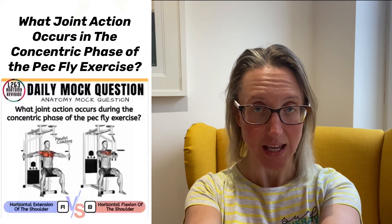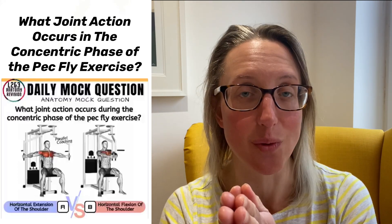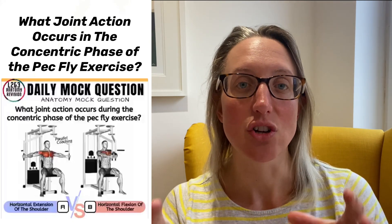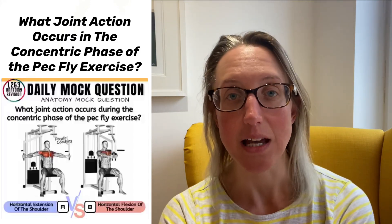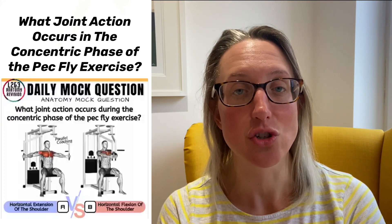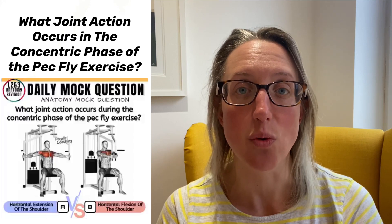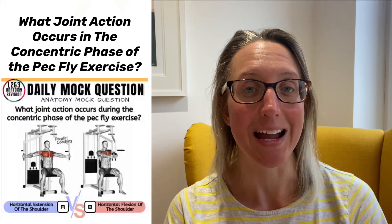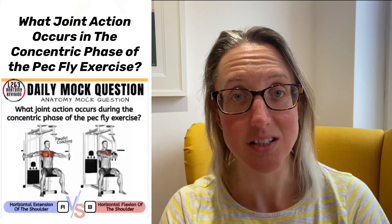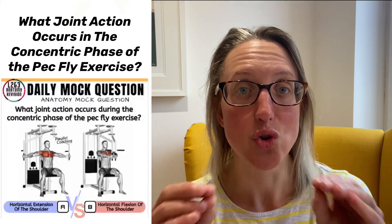The joint action in the concentric phase is this closing motion — bringing the hands together in front. Now we need to identify the joint action. Whenever you talk about joint actions, you need two things: which joint is involved, and the name of the action. The joint must be the shoulder, because the elbow isn't moving — it's an isolation exercise. So the shoulder joint is generating that motion.